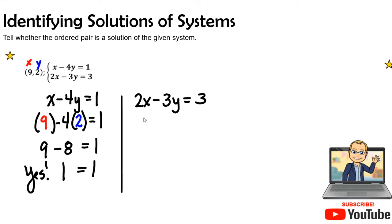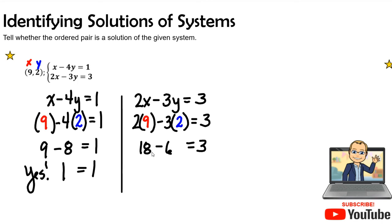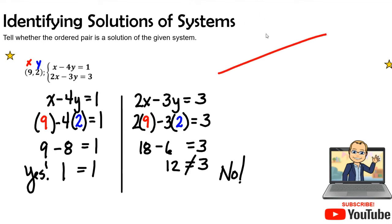Before it can be a solution, it has to be yes on both equations. For the second equation, 2x minus 3y equals 3: substituting, 2 times 9 is 18, and negative 3 times 2 is negative 6, giving 18 minus 6 equals 12, which does not equal 3. So the answer is no — it is not a solution. This means the two lines intersect at a different point, and 9, 2 may lie on one line but not at the intersection.